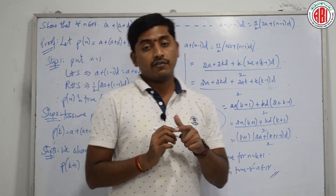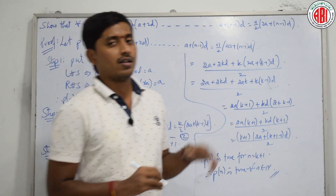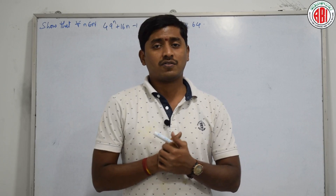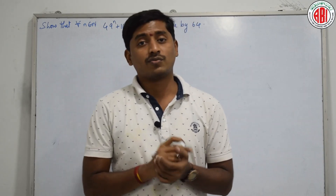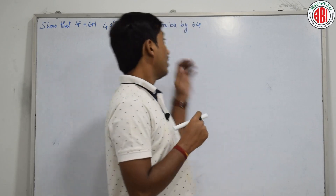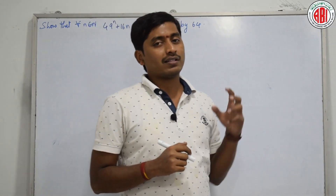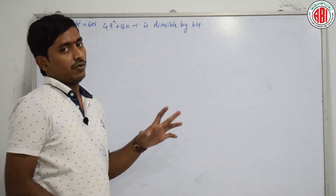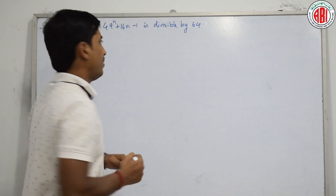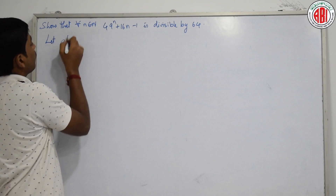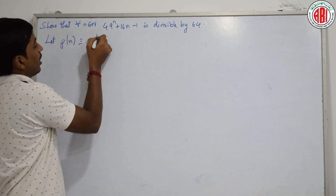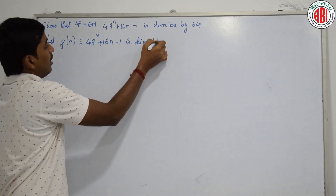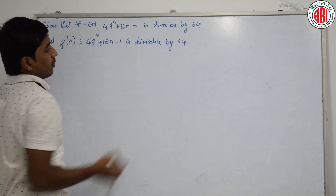Even for a variable kind of question, we can solve it. Let us go to the next problem — a new variety. Till now we have seen questions with mathematical summation statements. Now we have a generalized divisibility statement: we need to show that 49^n + 16n − 1 is always divisible by 64. Let P(n) be: 49^n + 16n − 1 is divisible by 64.